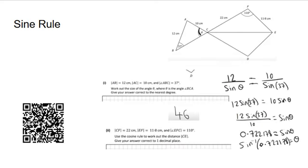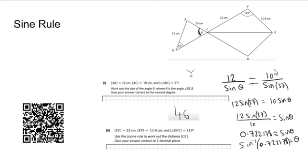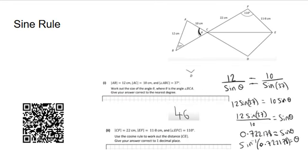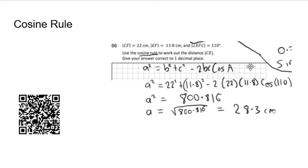For sine rule — used when there's no right-angle triangle — you take a side over the sine of the angle opposite it, equal to another side over the sine of its opposite angle. For cosine rule, the formula is a² = b² + c² − 2bc cos A, which is in the log tables. If a question explicitly says to use cosine rule for part two, it's a good clue that part one needs sine rule.